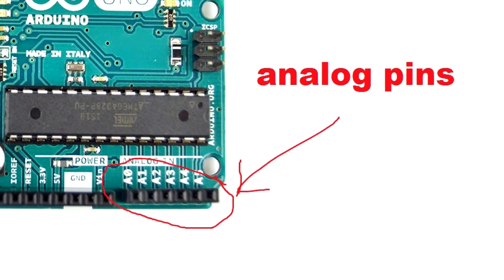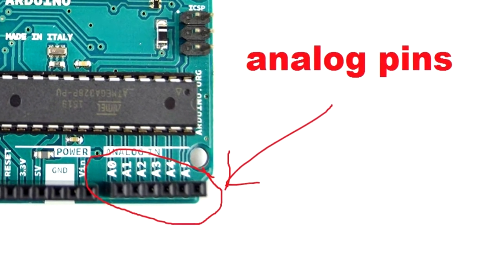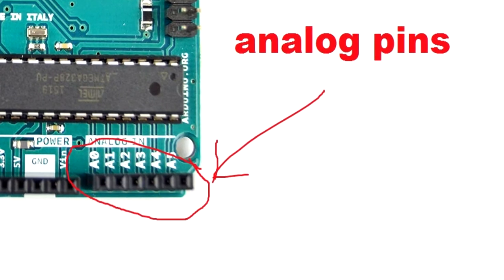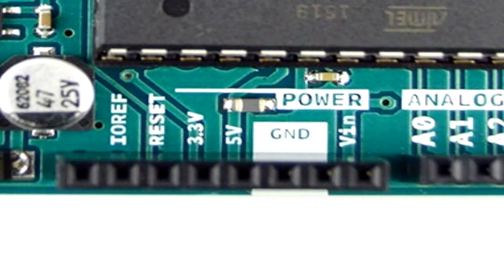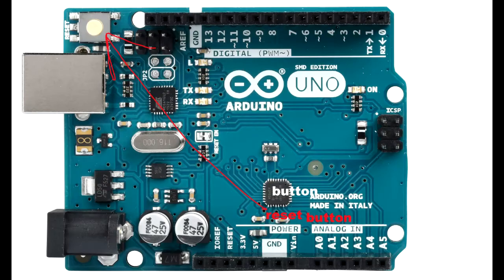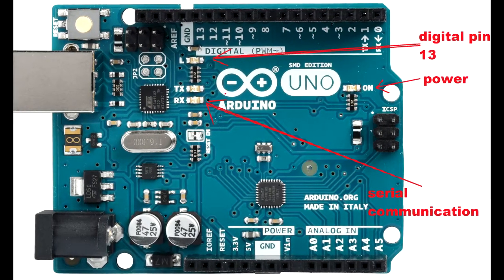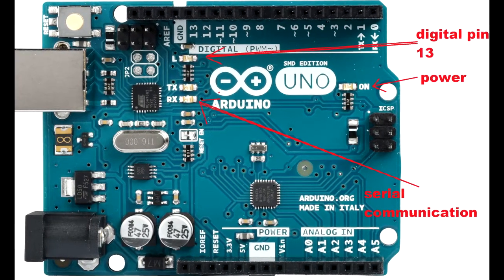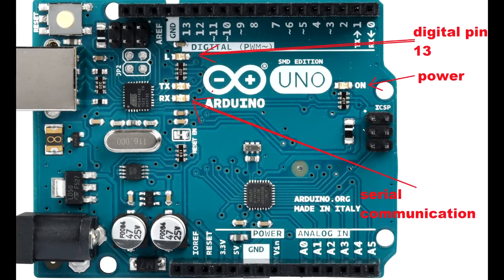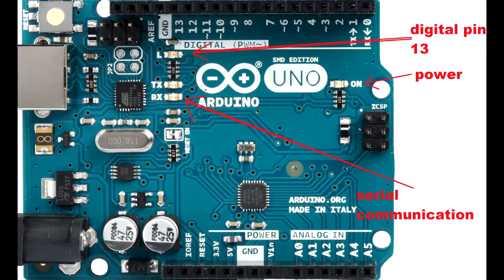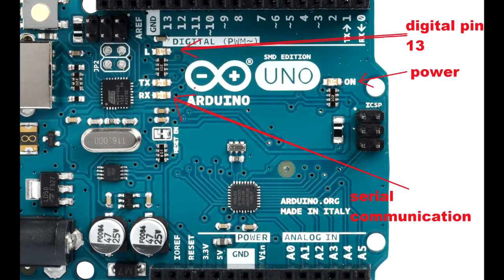The analog signal is used to convert. This is a reset pin, so we can connect the battery to the reset button. Here are four LEDs: one power LED, two LEDs for serial communication. This is the transfer LED and receive LED. The LED is connected to the digital pin.